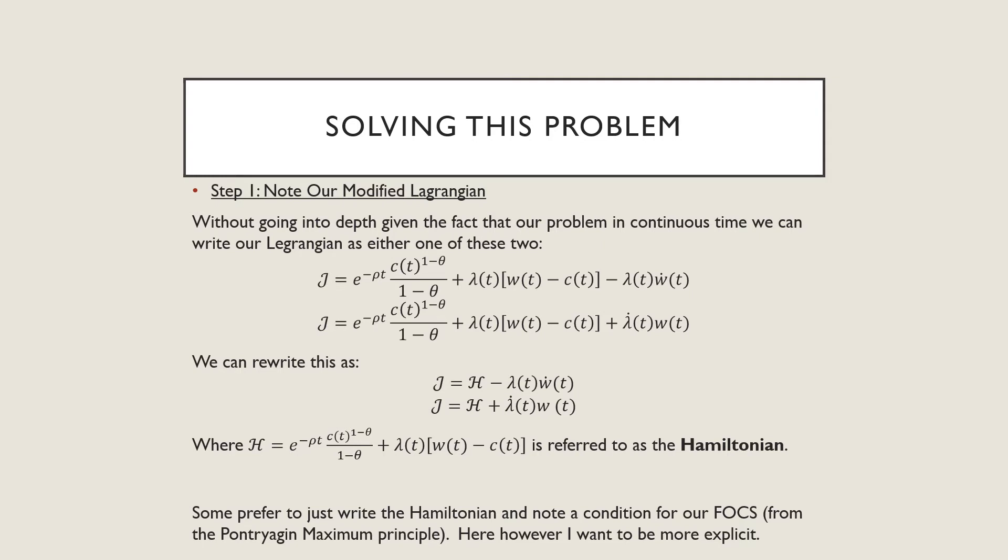We're going to be using this modified Lagrangian, where it looks like a Lagrangian, but we're going to have this plus and minus term at the end, changing where the dot is, whether it be on our multiplier or on our W, which is our law of motion. This H here is referred to as the Hamiltonian. Some people just go from the Hamiltonian directly and note a condition from our first order conditions and Pontryagin's maximum principle, but here I want to be more explicit.